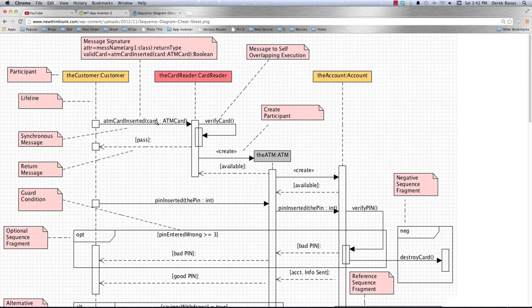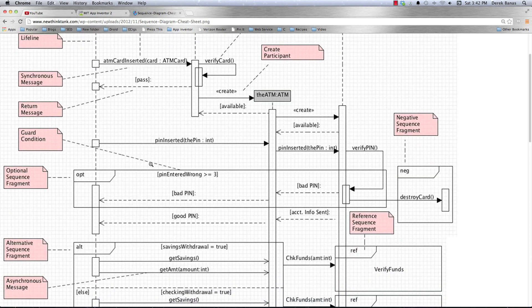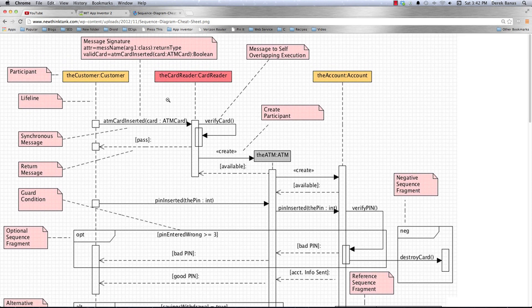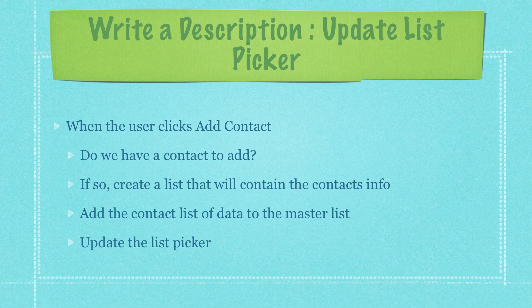Something I've been asked about a lot is why I don't draw out an App Inventor app using a sequence diagram. I'm not going to do that mainly because in my opinion it would complicate the process. What I will do instead is create a use case diagram or use case description. Let's take a look at what one of those would look like, and I'll demonstrate how to create one.